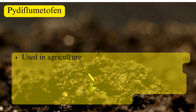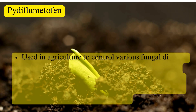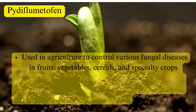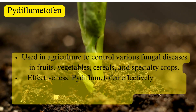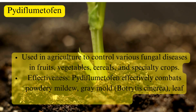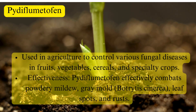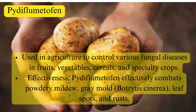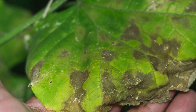Application: Pidiflumetophen is utilized in agriculture for the control of various fungal diseases. It is applied to a range of crops such as fruits, vegetables, cereals, and specialty crops. The systemic and translaminar properties of Pidiflumetophen make it effective against a broad spectrum of fungal pathogens in tomato, potato, melon, and cucumber, contributing to crop protection and yield improvement.